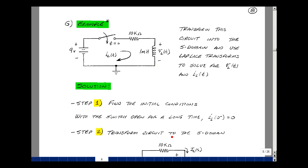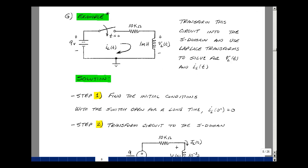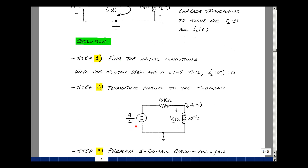Step two is to transform the circuit into the S domain and to use our equivalent circuit models. For t less than 0, we have no current flowing, so there's no drop across the resistor and no drop across the inductor — 0 volts. When t equals 0 plus, we have 9 volts, shown as 9 over S, a 10k resistor, and an impedance of S times L. L was 1 millihenry, and the initial condition is in parallel with the inductor but equals 0, so we leave it as an open circuit.